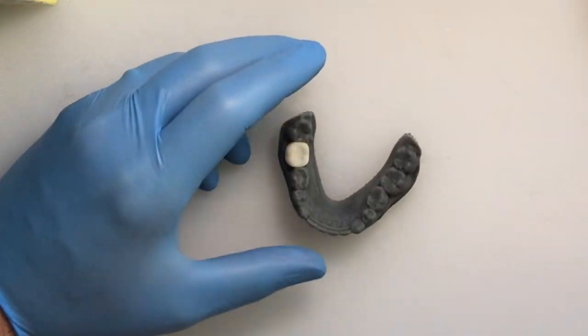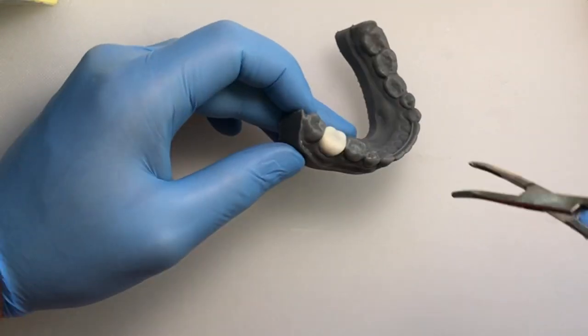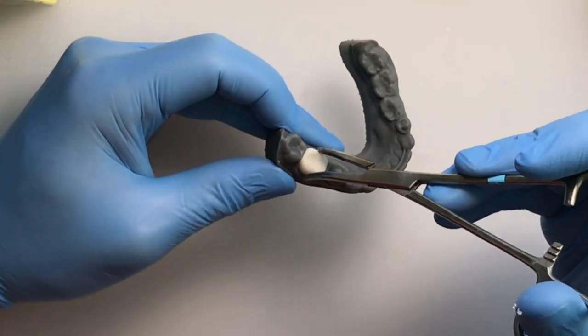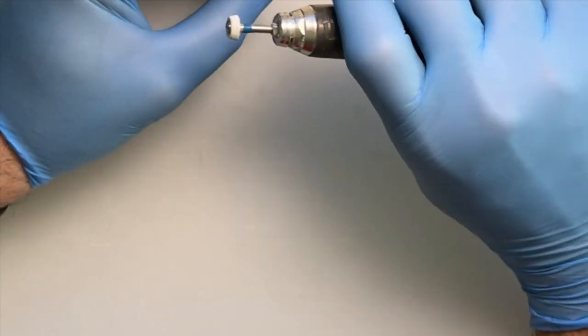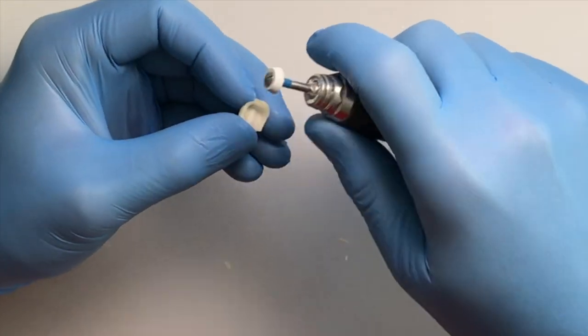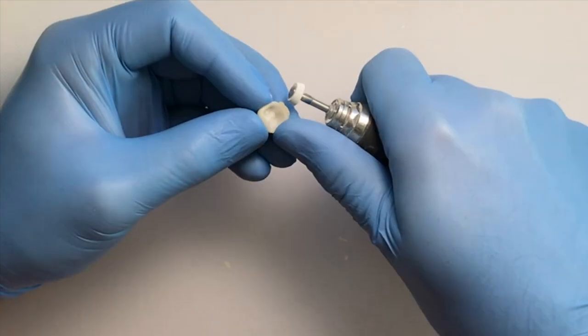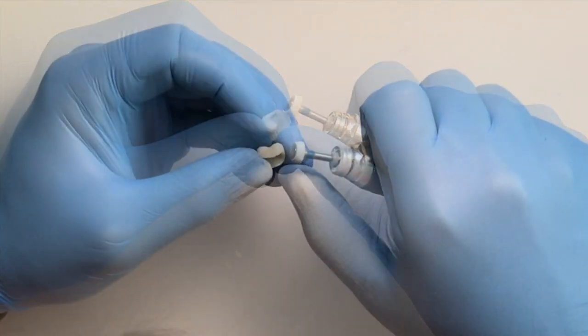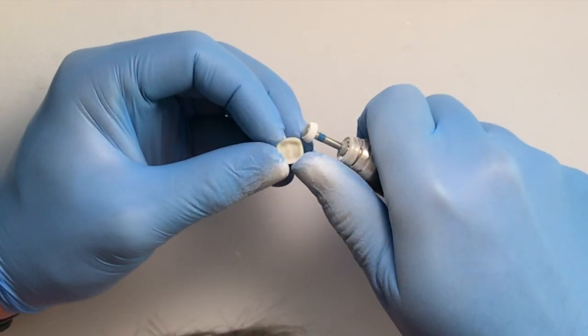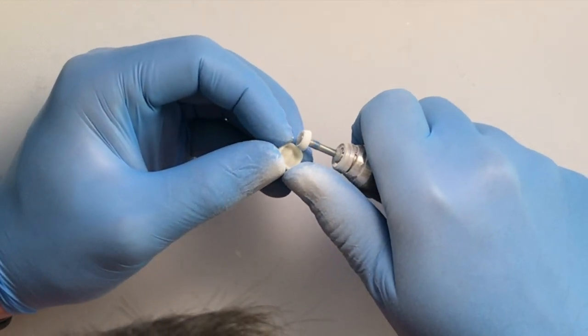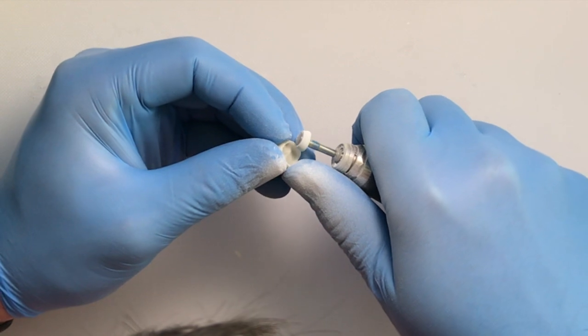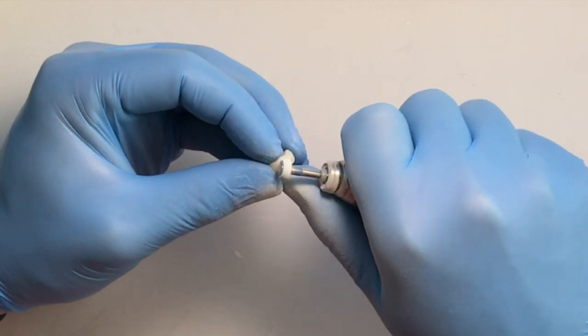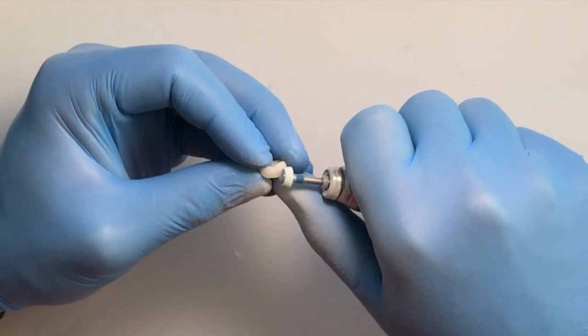Once the provisional is cured, we'll remove it carefully from the model. You can see here, using some hemostats, we'll then return to the polishing wheel or the aluminosilicate wheel and polish it so it's a nice and smooth transition from the facial, lingual, and proximal surfaces, ensuring there's no flash.